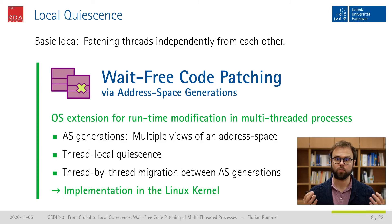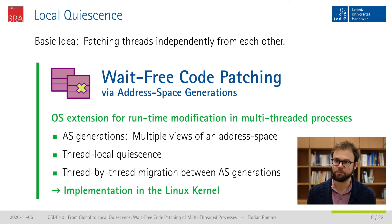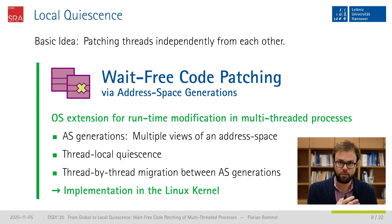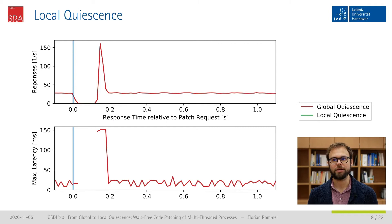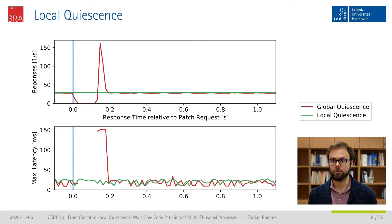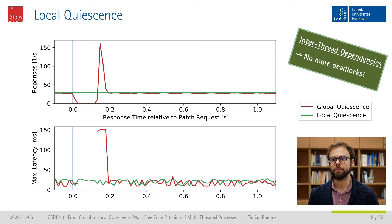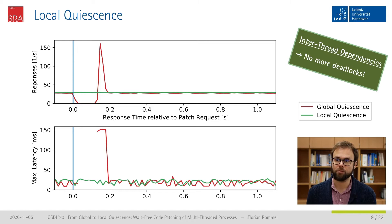We want to keep the basic idea of patching threads independently using thread-local quiescence, but without the kernel-patching-specific restrictions. Our solution is wait-free code patching via address-space-based generations. We developed a kernel extension where we exploit virtual memory to provide multiple views of an address space with slight differences — we call them address-space generations, as they represent different patching states of the process. With this, we are able to define quiescence thread-locally and migrate threads individually to newer generations. With our wait-free approach, we do not observe any change in the response rate during patching, and deadlocks caused by inter-thread dependencies are no longer a problem.